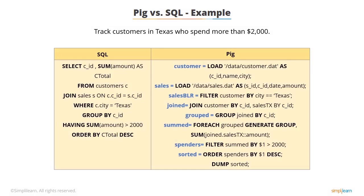Now let's understand the differences further with an example. The SQL command focuses on the customer table with columns CID and CTotal, which is the sum of the amounts. It joins the sales table with reference to CID where the city is Texas. The grouping of CID is performed ensuring the sum of the amounts is greater than 2000, ordered in descending order. In PIG, you create two entities, customer and sales, where you load equivalent data with the schema. You filter the customers based on location, for example Texas. Both data are joined using the CID row, the sum of the amounts of the individual CIDs is calculated, those customers who spend more than $2,000 are isolated, and then the customers are sorted in descending order.